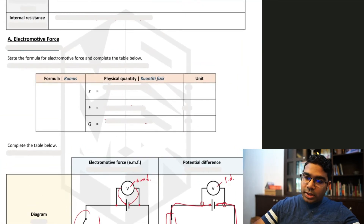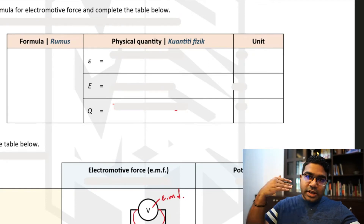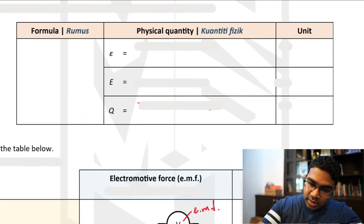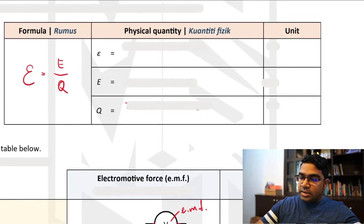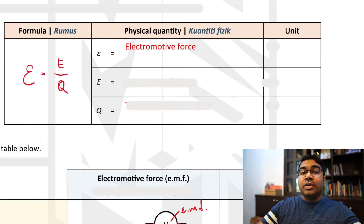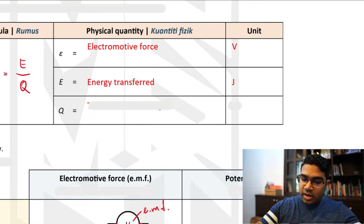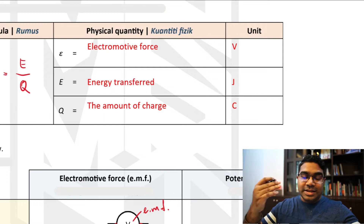What is the formula for EMF? EMF is a voltage — it is the energy per unit charge. EMF is represented by epsilon, which equals the energy transferred per unit charge. Epsilon stands for electromotive force, and again it is a voltage, therefore the units are volts. We have the energy transferred in joules divided by the charge in coulombs. This is the EMF.